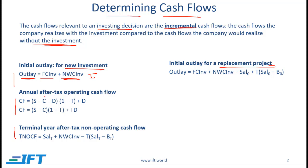Then we have after-tax operating cash flow every year. Say this is a three-year project: the initial outlay happens at time zero, then at end of year one, end of year two, and end of year three, there will be an after-tax operating cash flow. Obviously there are cash flows throughout the year, but for simplicity we assume the cash flow happens at the end of each year.